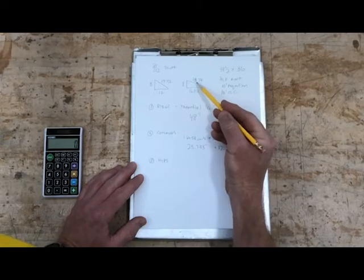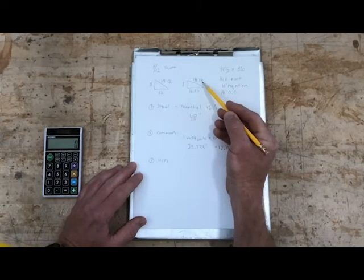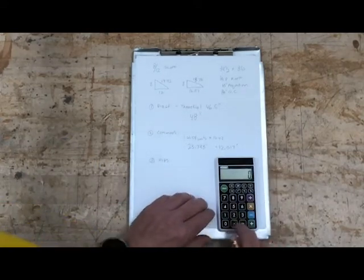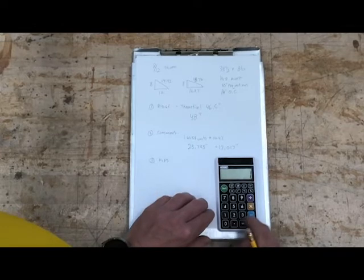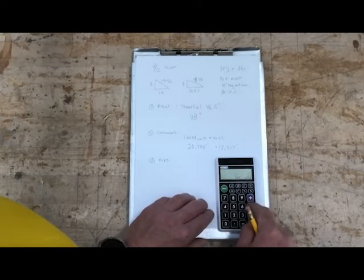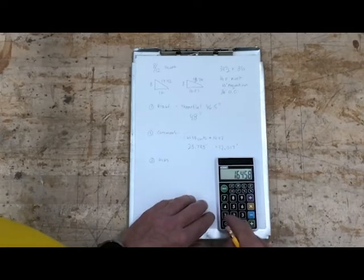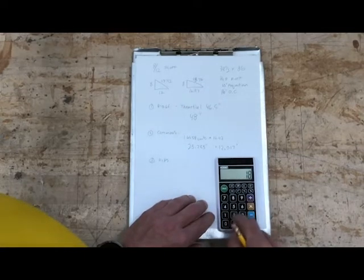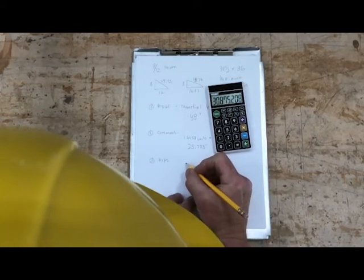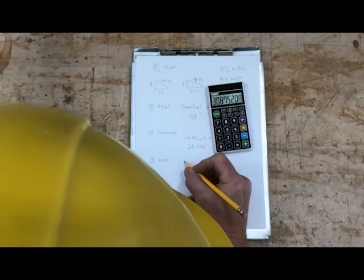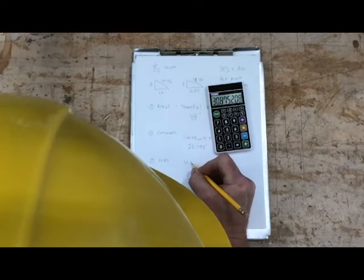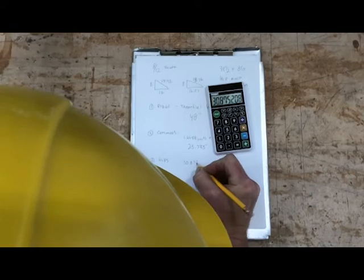Our line length is 18.76 per foot of run, which we could pull right off our framing square, but we did the math right there. So I'm going to do this 1.6458 times my unit line length for the hip or valley, 18.76. And so my length here to the building line from center of ridge is 30.875 inches.